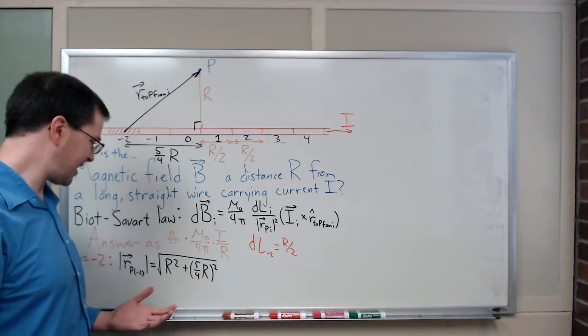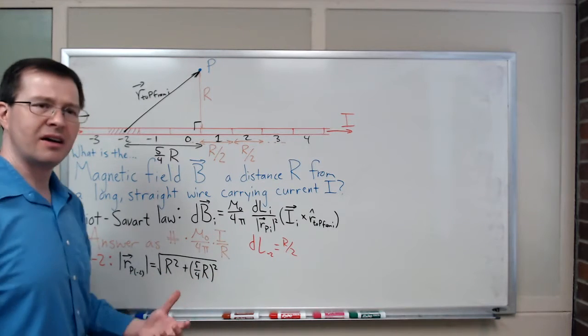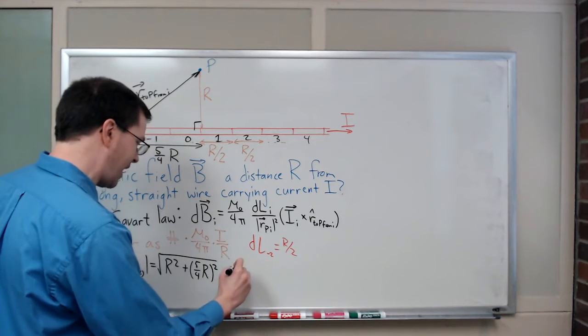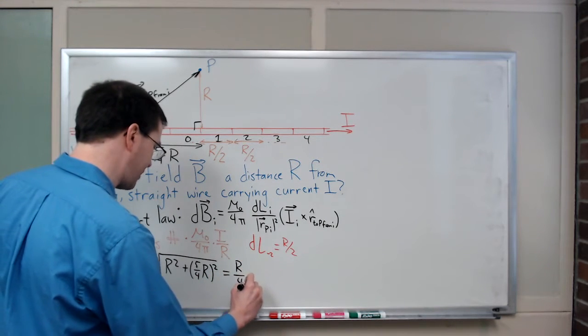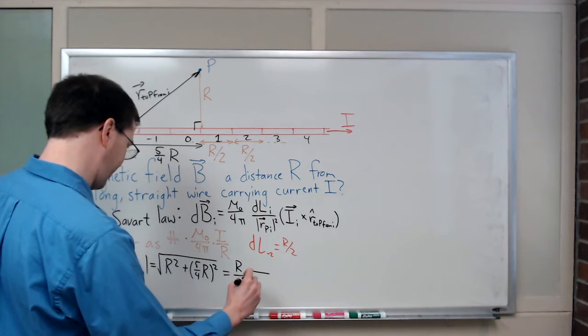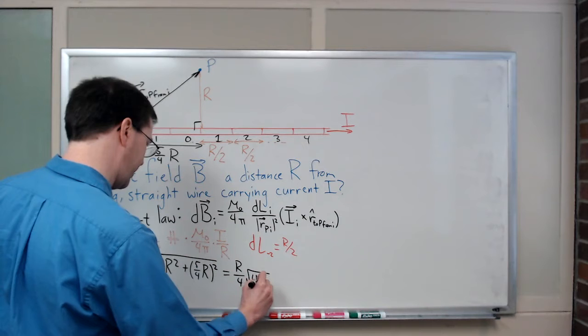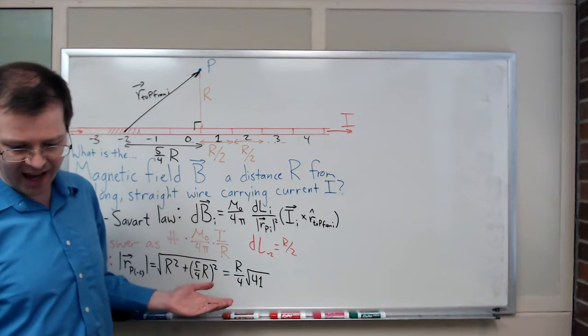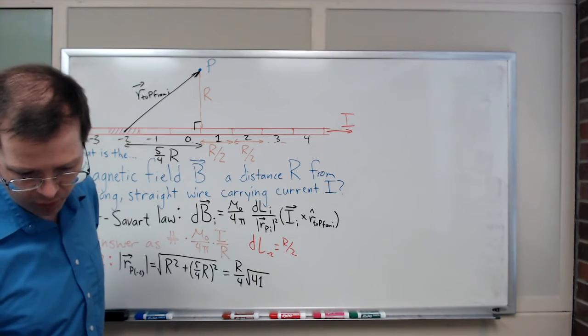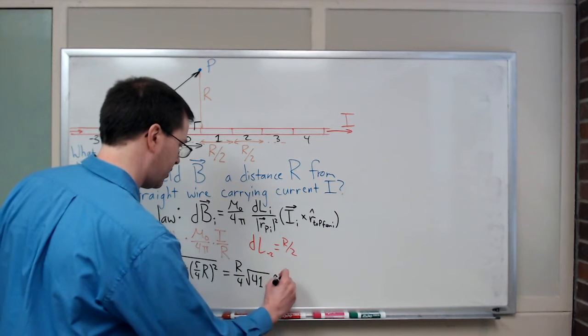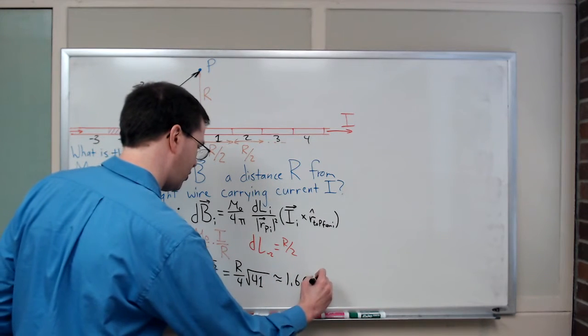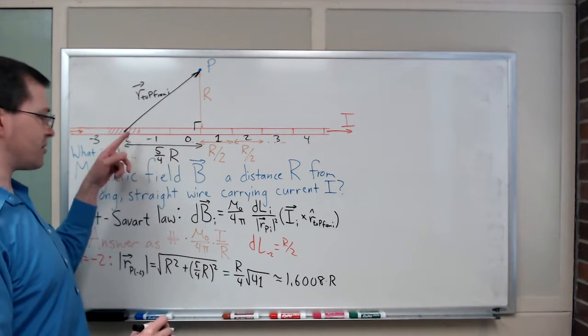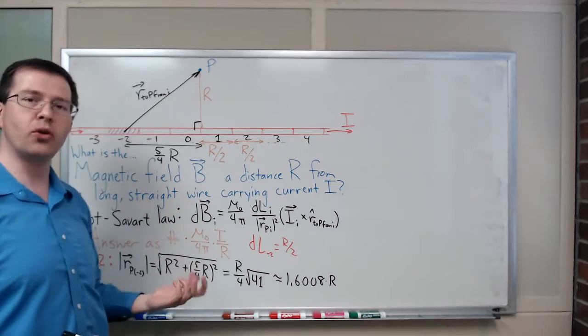This distance is 5 fourths R. Half plus half plus a quarter. I can multiply this out, R squared. Check my math. I'm going to get R over 4 times the square root of 41 is the answer that I've gotten for this length. That is approximately 1.6008 times my distance R. That's what this diagonal is.